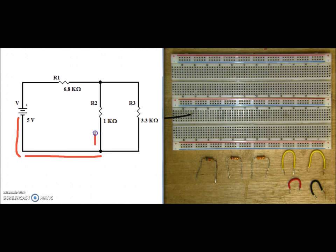So some of the current flows up through R2. The rest of the current flows through R3 where it meets back up at the corresponding node.